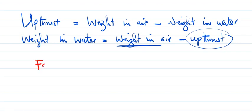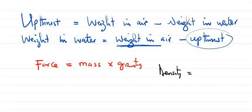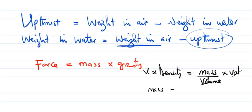Let me derive the formula for thrust force. Using Newton's second law, force equals mass times acceleration due to gravity. And from the density formula, density equals mass divided by volume. So rearranging, mass equals density times volume.